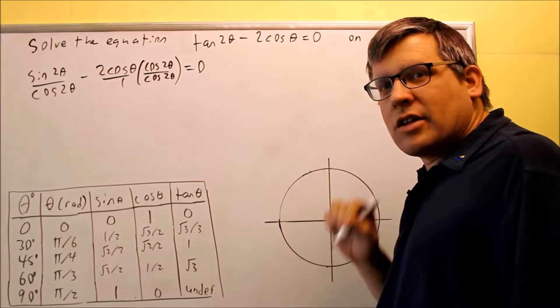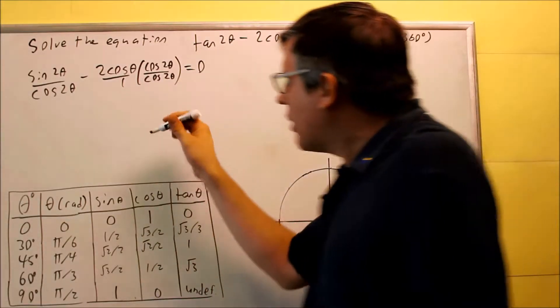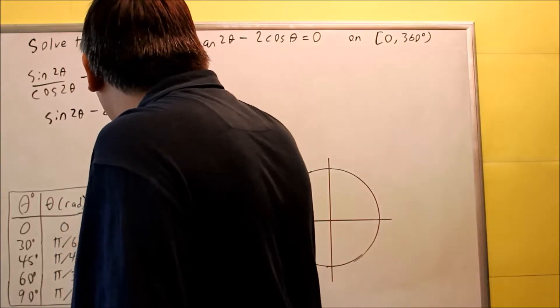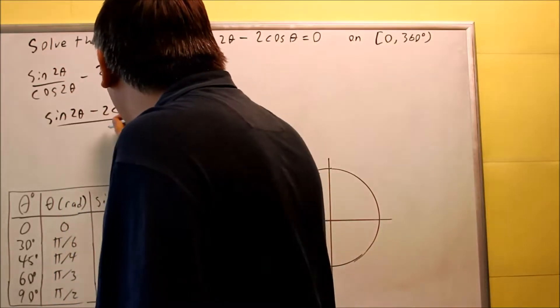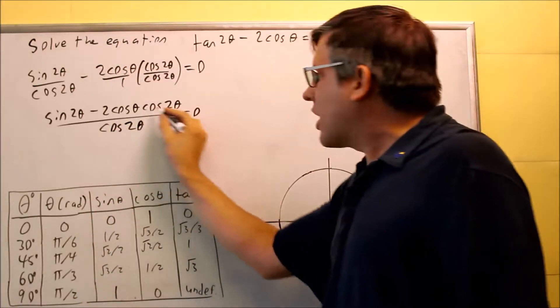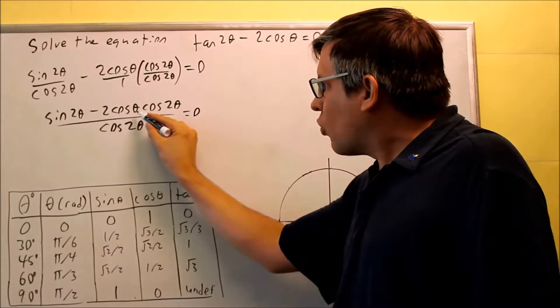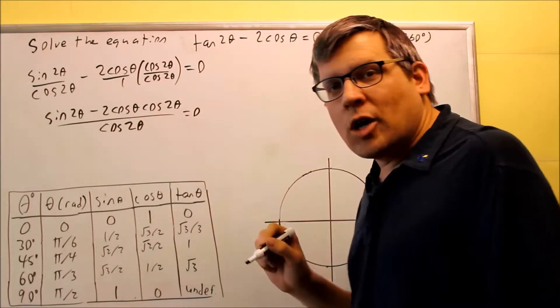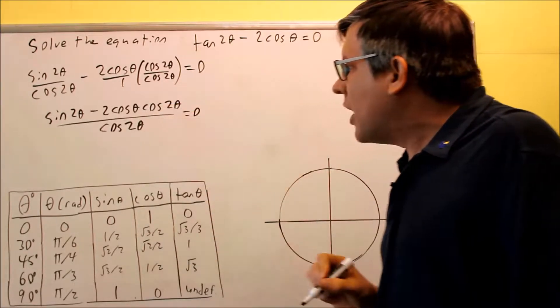Okay, now I'm going to combine this together as a single fraction. Now I have common denominators. Sine 2 theta minus 2 cosine theta cosine 2 theta over cosine 2 theta here. These two, I can't make that cosine squared because one's theta and one's 2 theta, so that's why I'm not allowed to multiply and make it a square because I don't have like things that I can combine together.